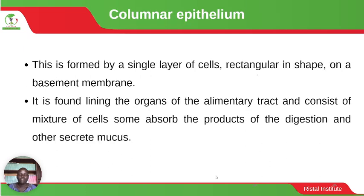Columnar epithelium is formed by a single layer of cells, normally rectangular in shape, on a basement membrane. It is found lining the organs of the alimentary tract and consists of a mixture of cells — some absorb the products of digestion and others secrete mucus.